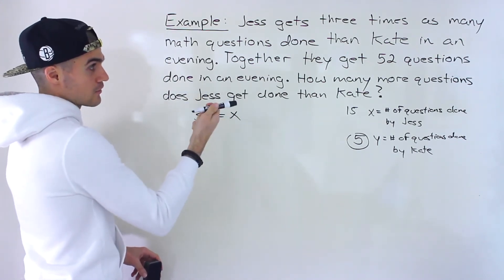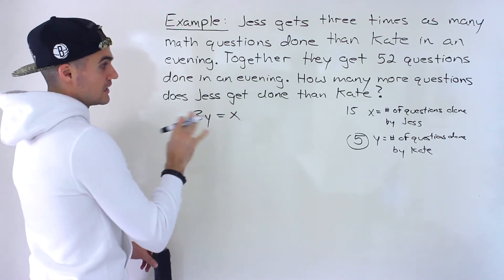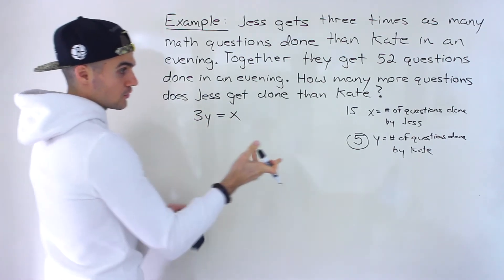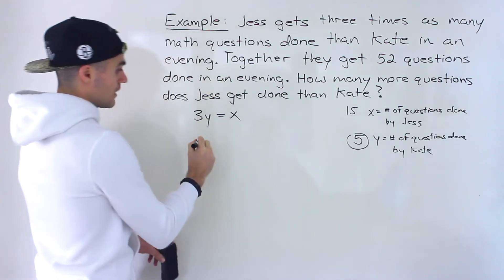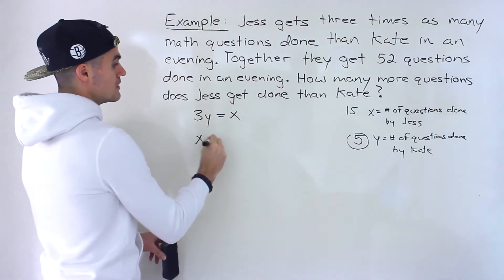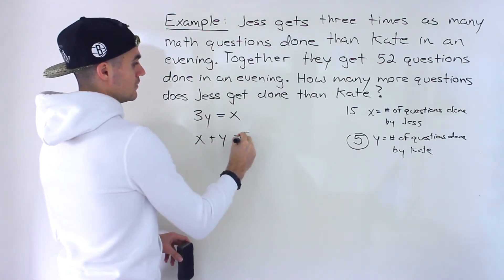And then we're told together they get 52 questions done in an evening. Meaning in total, right, both of these added up. So x plus y is equal to 52.